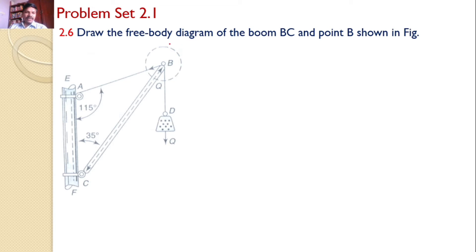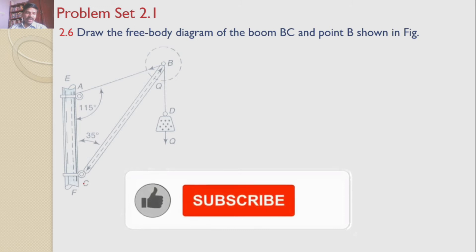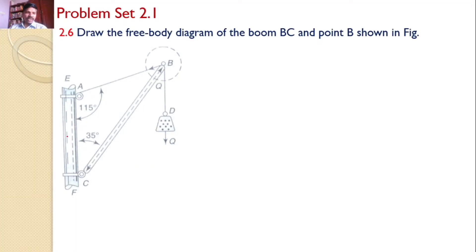Now, this is the given figure. In that, there is a boom BC, one end is fixed to a fixed support EF, and at the other end B, a string is connected.